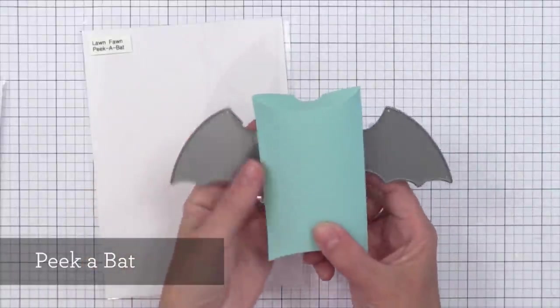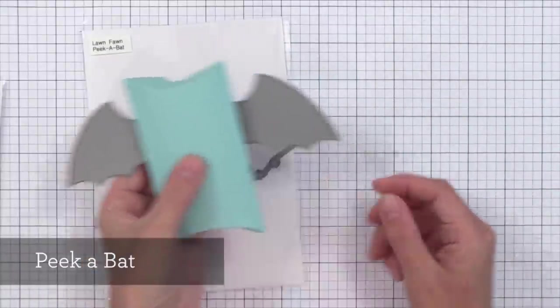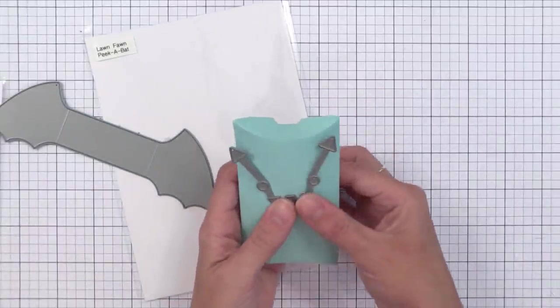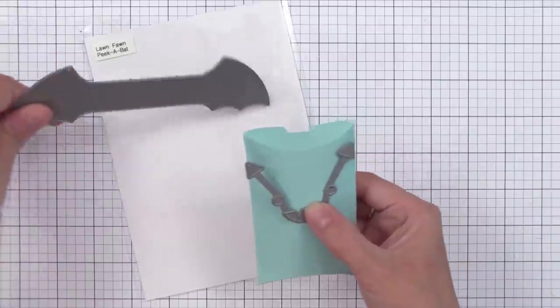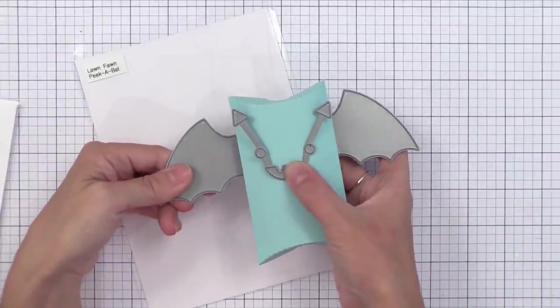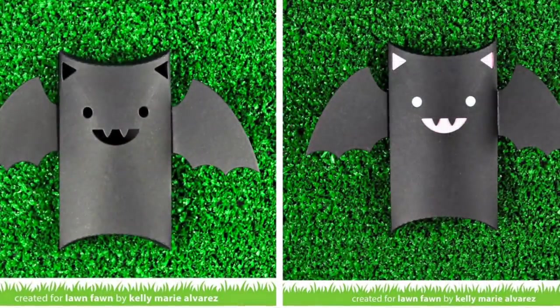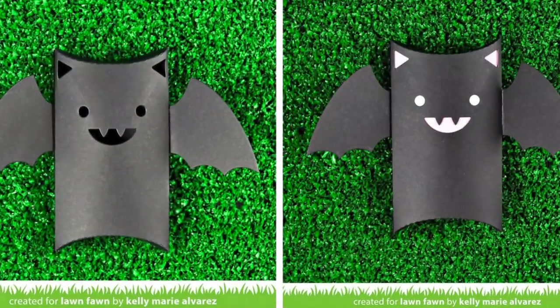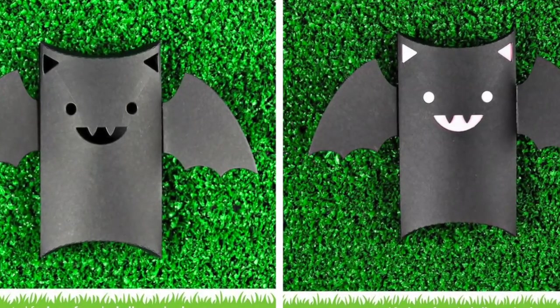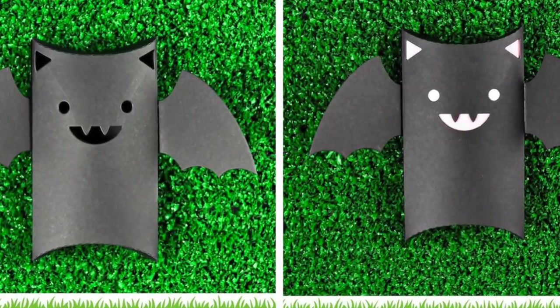There is also the peak a bat die set. Now this one creates little wings that you can attach to the back of the pillow box and then the cute little face that you can die cut from the front of the pillow box. Again, you could do this from a little gift bag or from a little card also. Here are some samples that Kelly Marie created. By the way, I will link to her samples on her blog and she's got videos showing how to create these, but they're super simple.